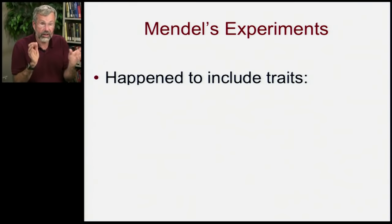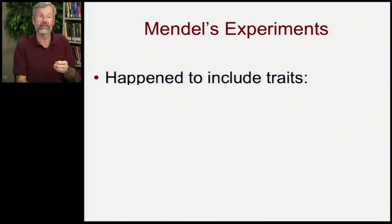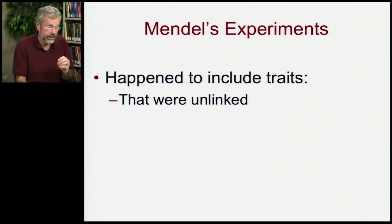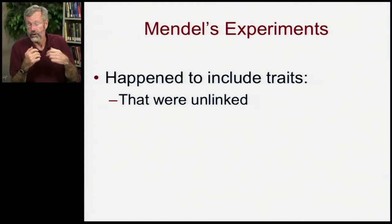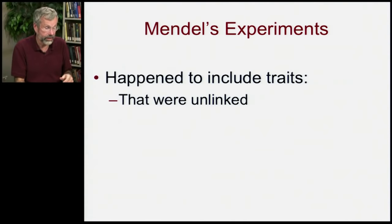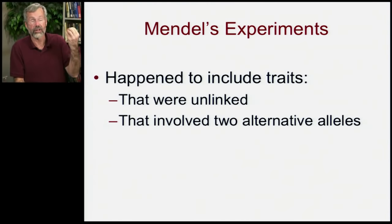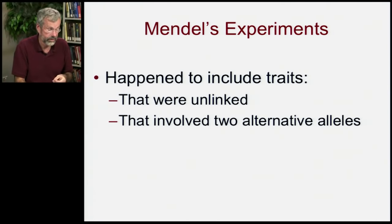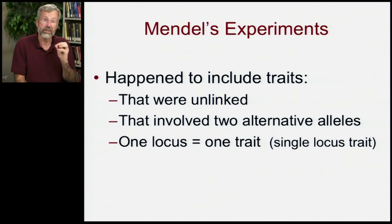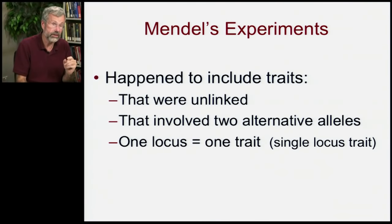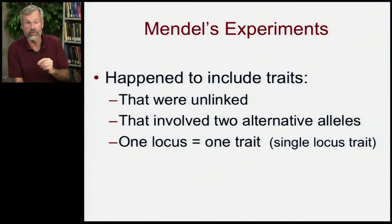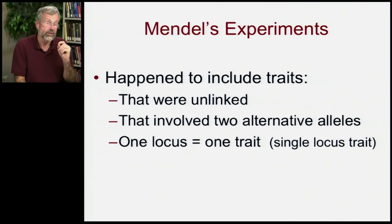Mendel, this is all he knew, because his experiments on peas happened to include a very limited number of traits. They were unlinked, so they weren't passed on in tandem — there really was independent assortment of wrinkled versus green versus tall. Each trait he looked at actually only had two alternative alleles: either tall or short, green or yellow, wrinkled or smooth. And it was one locus, one trait — one gene controlled whether the pea was wrinkled, how tall the plant was, whether it had a purple flower. So that's a single locus trait.